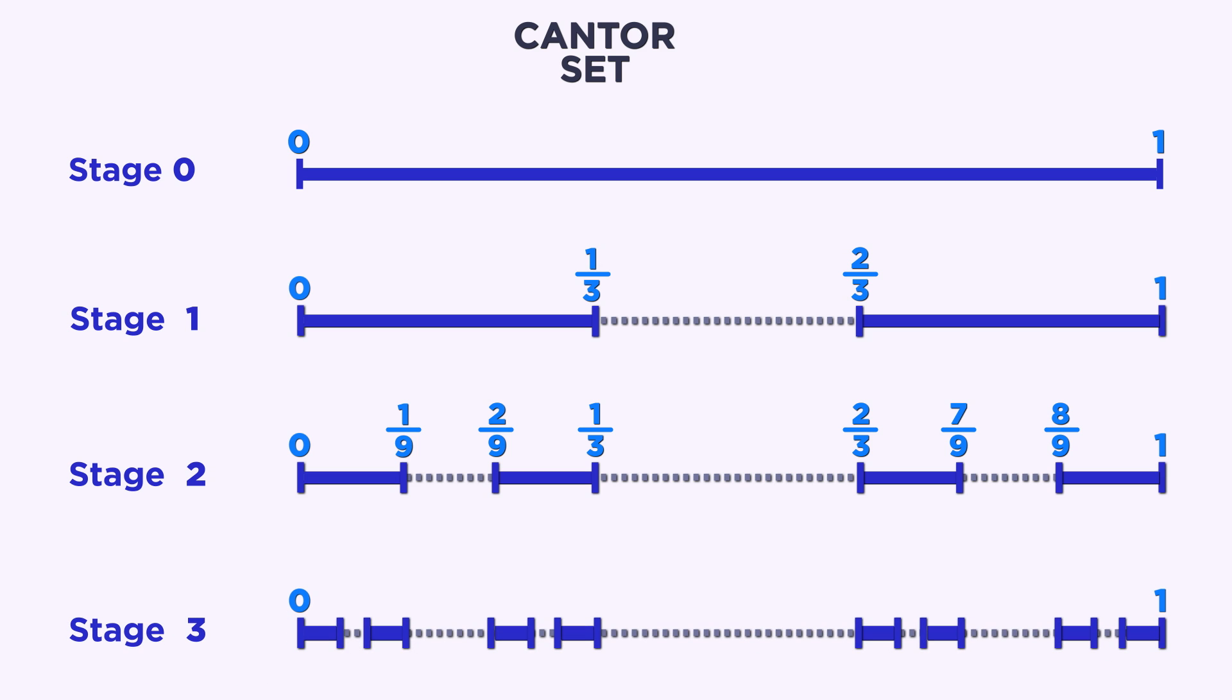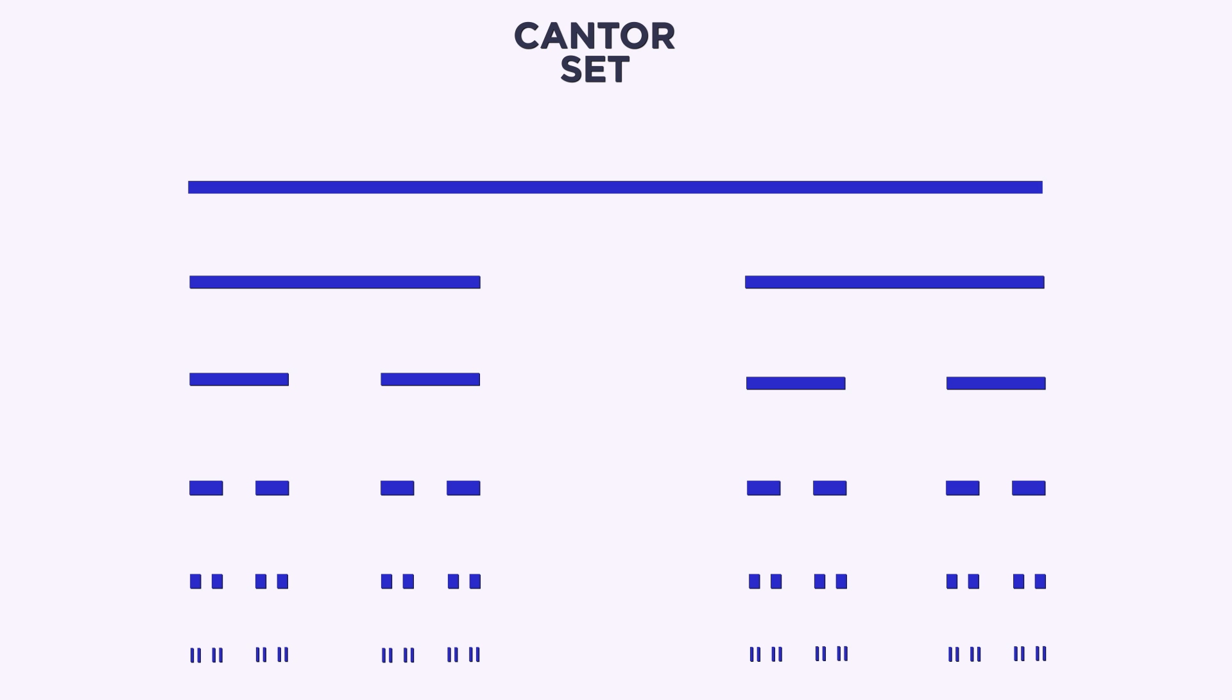In stage 3, we remove the middle third from each of these, which leaves us with 8 intervals of size 1/27. And then we keep doing this on and on. The collection of points that are left after infinitely many stages is known as the Cantor set. But are there any points left? We just kept removing middle thirds over and over again. Maybe we removed everything.